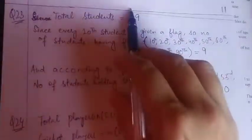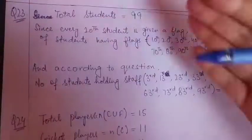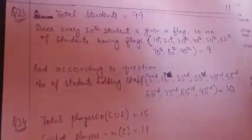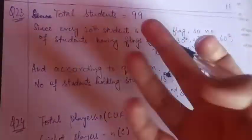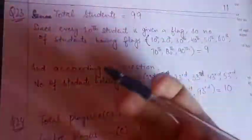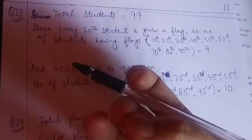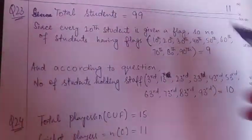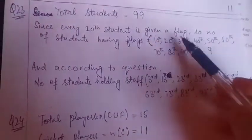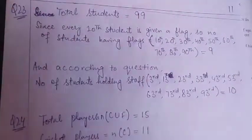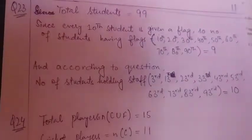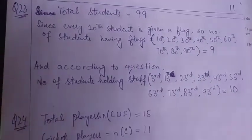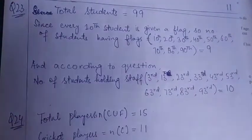Okay, total students 99 hai. Since har 10th bachche ke paas flag hai, that means 10th, toh kinhe flags, kinhe bachche ke paas? Tenth, 20th, 30th, 40th, 50th, 60th, 70th, 80th, 90th. 100th pe hum nahi jaa sakte because 99 hi bachche hai. Okay, just count these: 1, 2, 3, 4, 5, 6, 7, 8, 9. That means 9 students ke paas flag hai. It is very simple. Agar har 10th hai toh hum hai 10th ka table padhna padhega, right? 100th tak nahi jaa sakte. But 99 hi bachche hai.